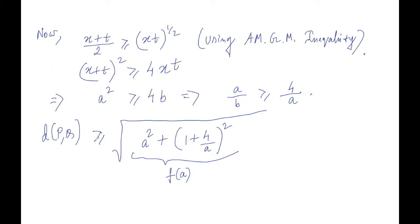So now you know that in AM-GM inequality, the equality occurs when the variables are equal. So this will happen, the equality will occur, that means the distance between P and Q will attain its minimum when you have x equals t.